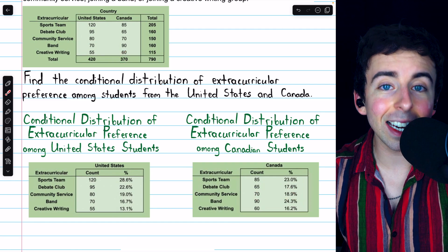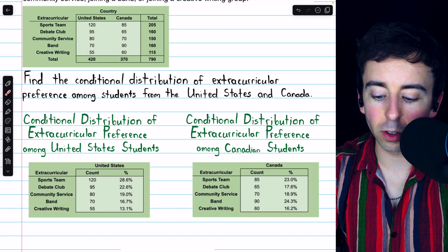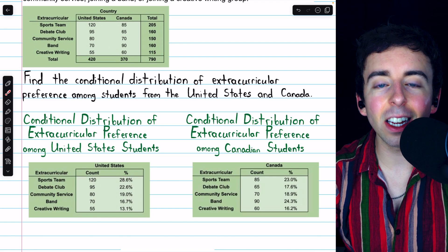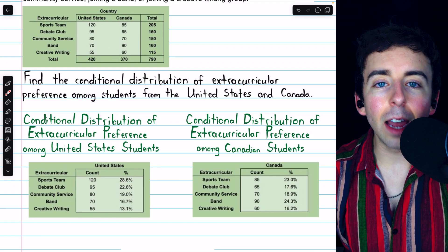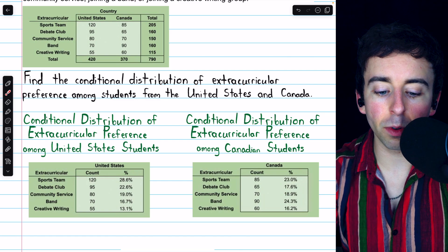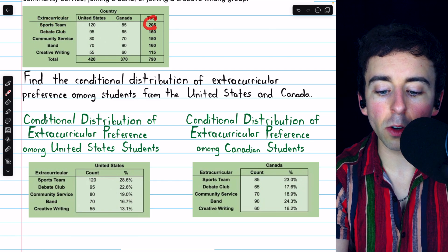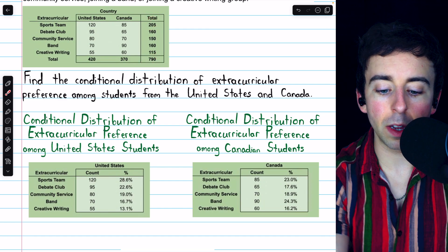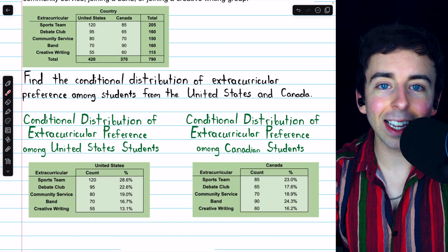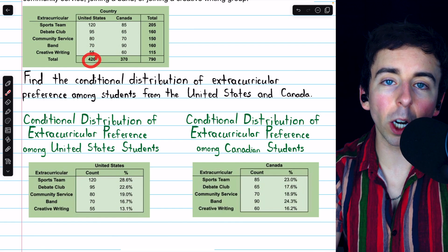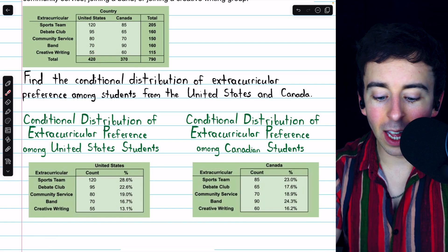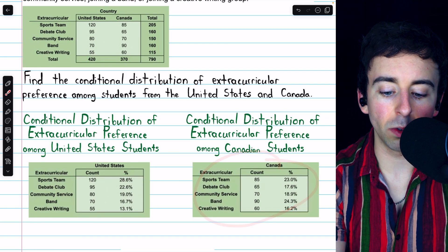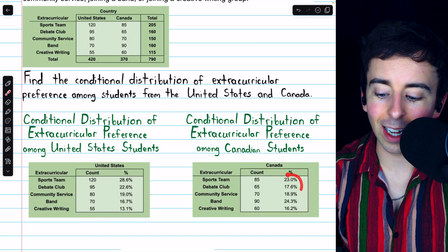18.9% of Canadian students said they would prefer to engage in community service. So in a conditional distribution, the condition will change what we view as the total. If we asked what percent of students preferred to join a sports team, we'd take 205 and divide by 790. But given that the student must be from the United States, we're looking at those 420 students as our new total — that's how we calculate these percentages. Just like for the Canadian distribution, we use 370 as the total.